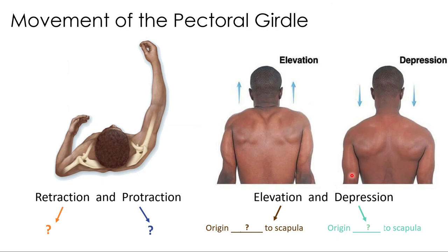The pectoral girdle can be retracted, protracted, elevated, and depressed. To think about where muscles must be located to achieve these actions: a muscle that elevates the scapula must have its origin superior to the scapula, pulling it upward. Likewise, a muscle that depresses the pectoral girdle will be inferior to the scapula. For retraction and protraction, the same logic applies — retractors are on the posterior part of the body and protractors are on the anterior part.